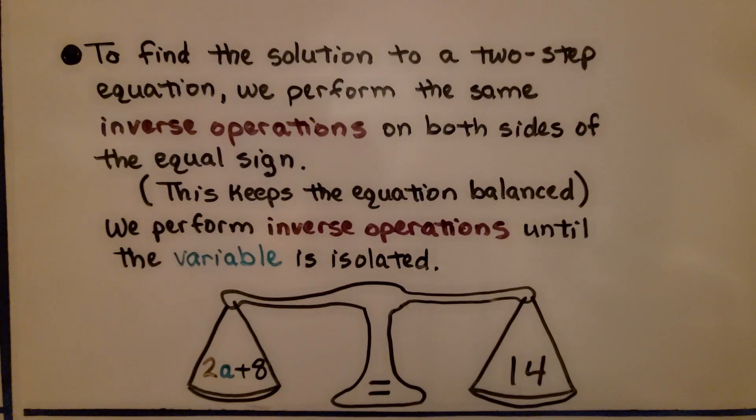To find the solution to a two-step equation, we perform the same inverse operations on both sides of the equal sign. This keeps the equation balanced. We perform inverse operations until the variable is isolated. If we have a balanced scale with 2A plus 8 on this side, equal to 14 on this side, we can figure out the value of A by taking away 8 from this side and taking away 8 from this side, which would make this a 6. Now we know that 2A equals 6. And if 2As equal 6, then 1A must equal 3.